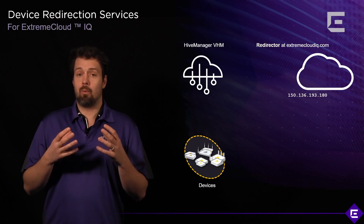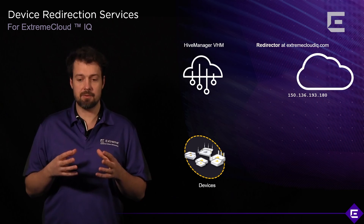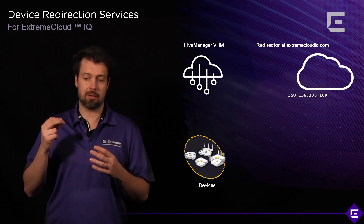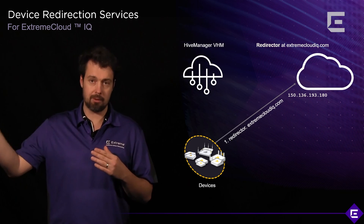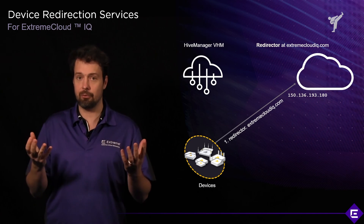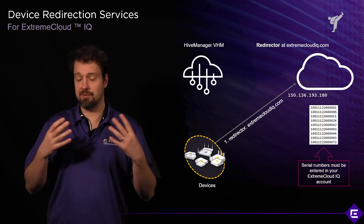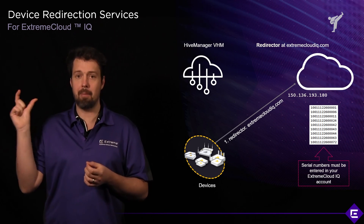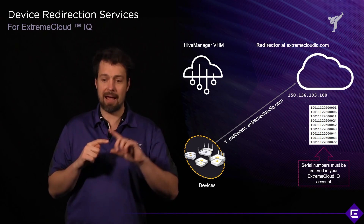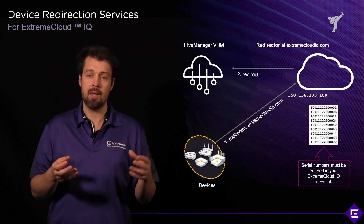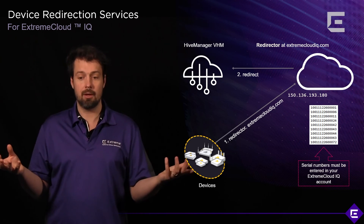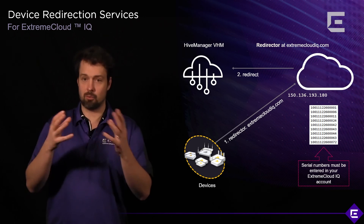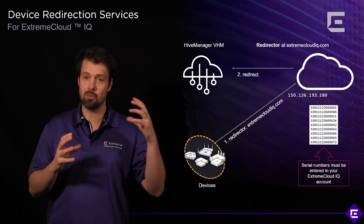Every Extreme Wireless Cloud access point comes preconfigured with a mechanism that will call to redirector.extremecloudiq.com. It will invoke a request to that URL and introduce itself with its serial number. A service called Redirector, part of our private cloud deployment, will match that serial number with the customer it belongs to and redirect it to the correct RDC or regional data center. Within the regional data center, there's an entity called Virtual IQ, or a Virtual Extreme Cloud IQ instance, and that's what the access point, switch, or branch router will attach itself to, mapping it to a customer instance.